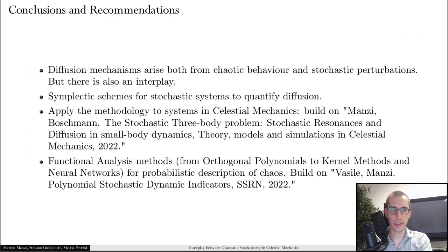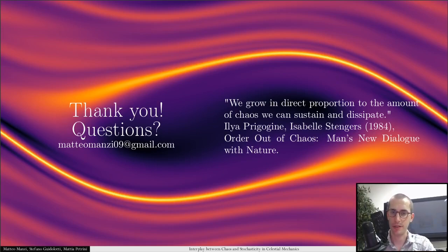So this is it. Let me conclude saying that it was interesting to analyze chaotic behavior and stochastic perturbations together and to define an object that quantifies that and also look at the interplay between these two phenomena. We would like to work more on the definition of symplectic schemes for the integration of stochastic systems to actually quantify the diffusion of first integrals associated to the deterministic case. The idea is to apply first this methodology to a celestial mechanics problem in which we introduce stochastic perturbations to a well-known orbital mechanics problem. And then to generalize previous works on the quantification of chaos in a probabilistic setting using not only orthogonal polynomials, but also kernel methods and neural networks. Thank you very much. I look forward to your questions via email.